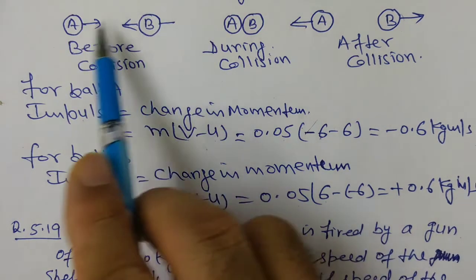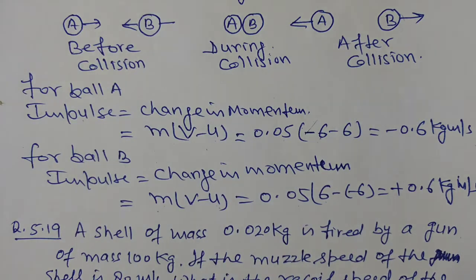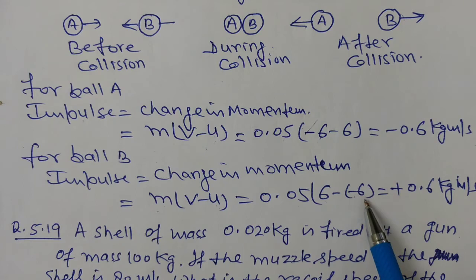This is initial velocity of ball B along negative x-axis, therefore this is minus 6. So 6 plus 6 is 12 into 0.05, which equals plus 0.6 kg meter per second.